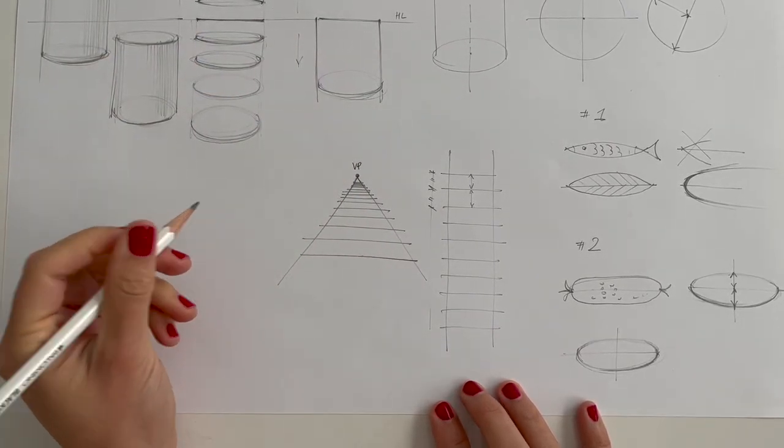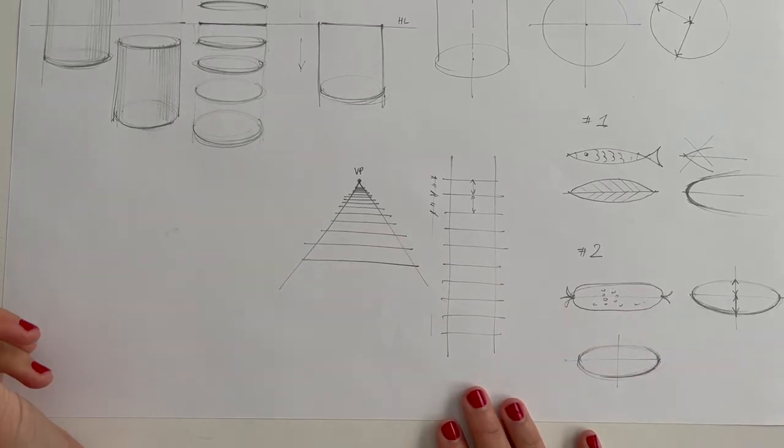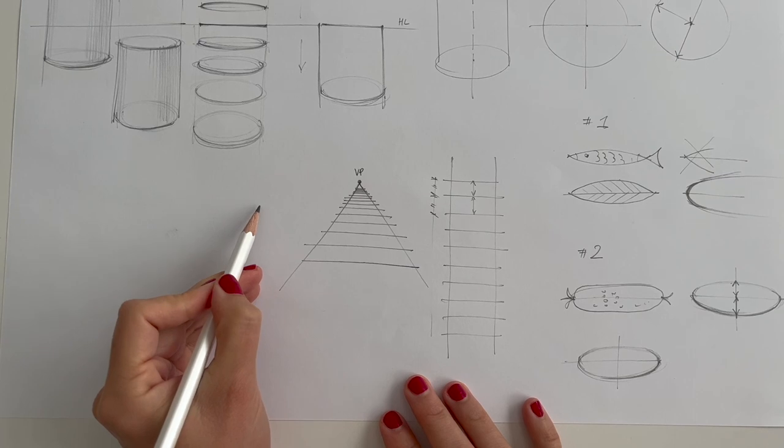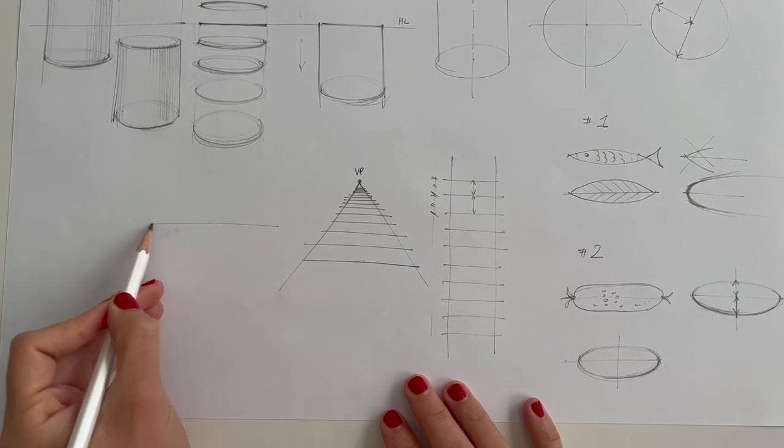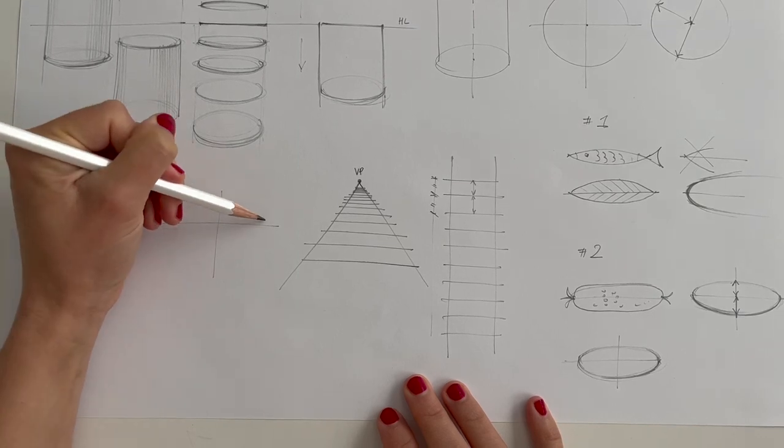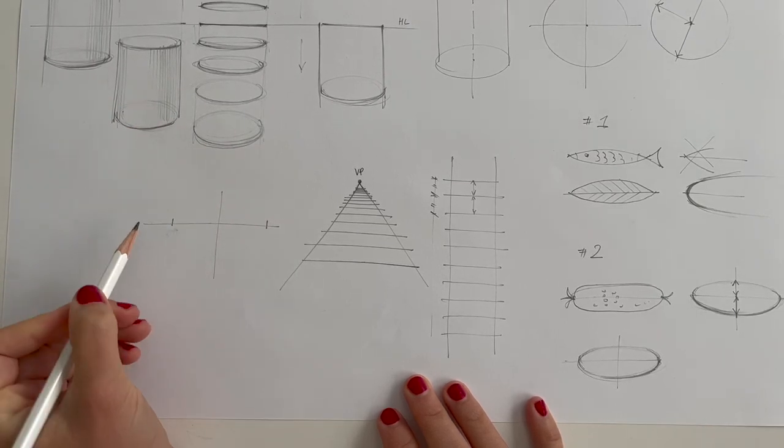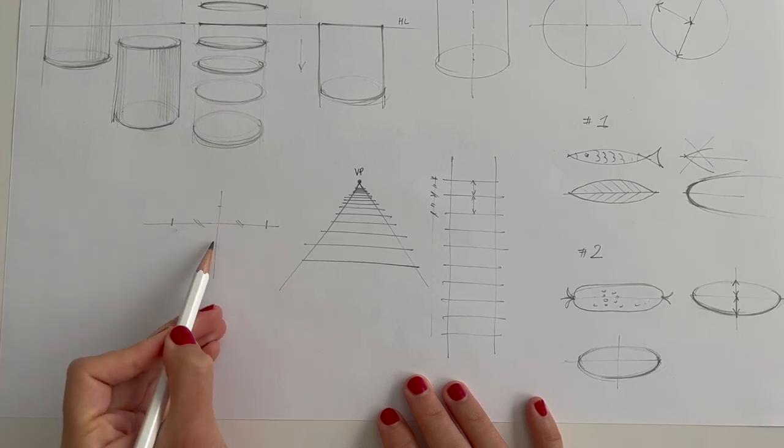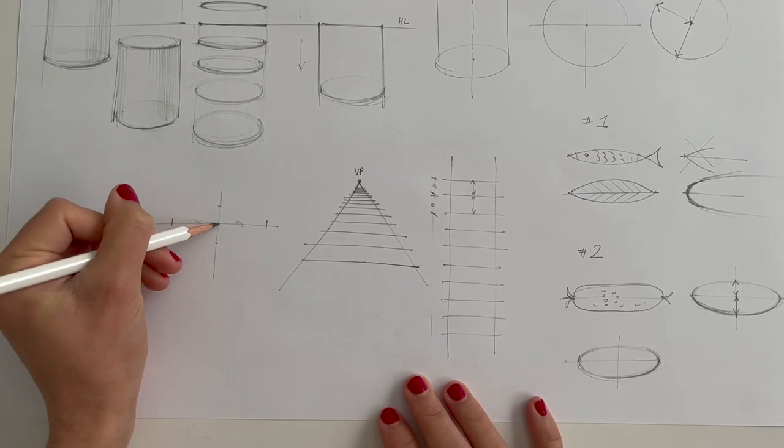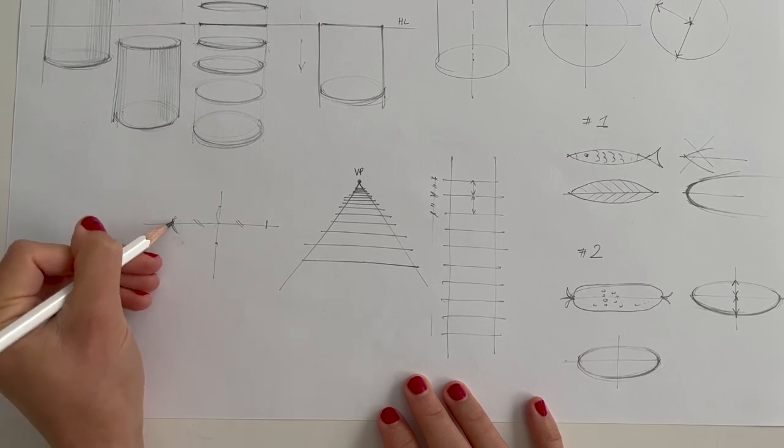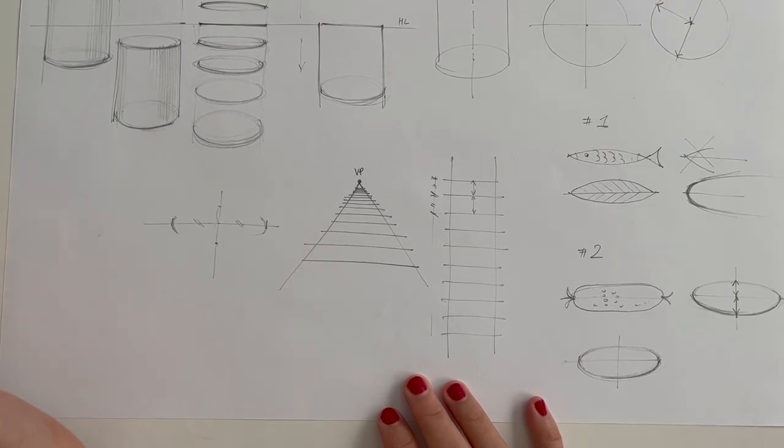Of course, when drawing ellipses, it won't be as obvious as when we draw a railroad. So one more time. Horizontal and vertical axis. On horizontal axis, put the equal distance to the left and to the right from the vertical axis. They are equal. But with the vertical axis, we want to measure slightly more to the half of this ellipse, which is closer to us.